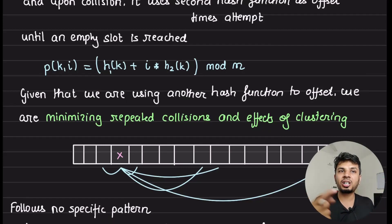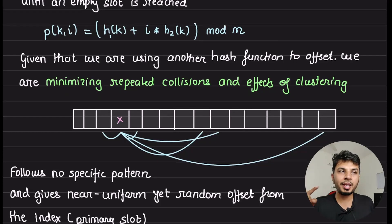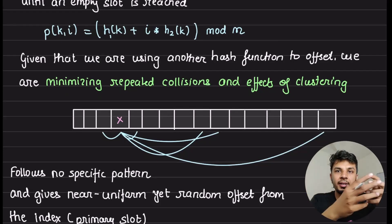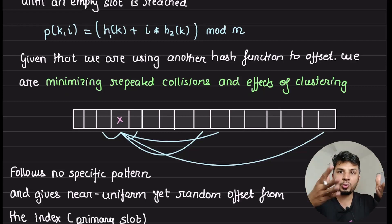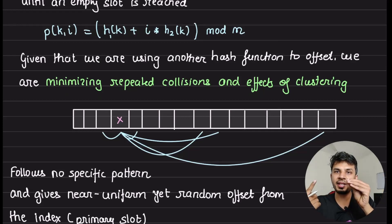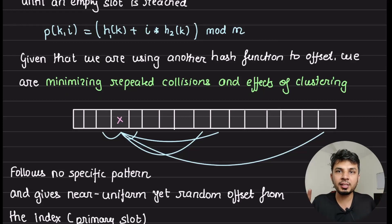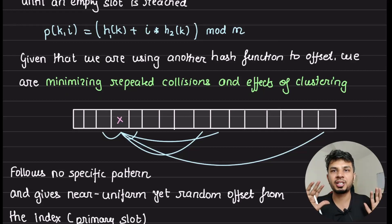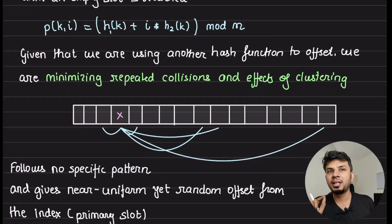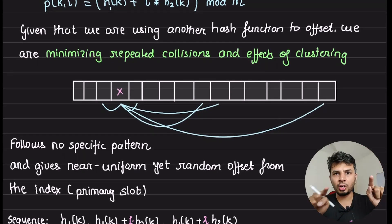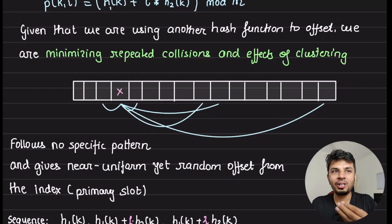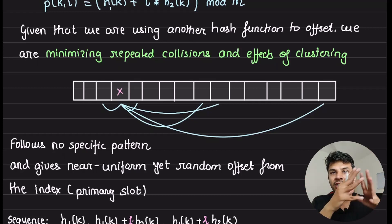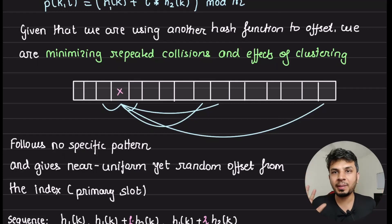By using a second hash function we leverage the entire hash table without following any specific pattern. Since it's a hash function, it has a uniform probability of hashing to any slot. The first hash function gives uniform distribution; upon collision, the second hash function again gives uniform probability across the entire table, minimizing repeated and clustered collisions. With double hashing there is no fixed pattern — it totally depends on the key.